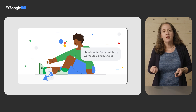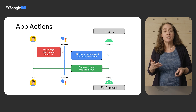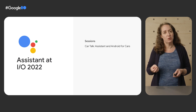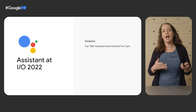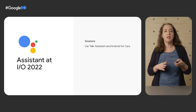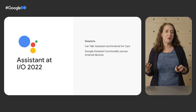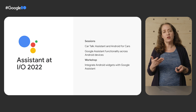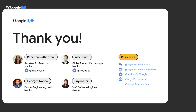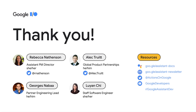Thanks, George. Google is working hard to make Assistant the best way for users to get things done with their favorite apps and devices. We've seen that users want voice to work more seamlessly, and Google's investment in machine learning and NLU can be leveraged by developers with App Actions. To learn more, check out our other Assistant sessions including CarTalk: Assistant for Android Auto, and Google Assistant Functionality Across Android Devices. For hands-on learning, check out our workshop on integrating Android widgets with Google Assistant using App Actions. Check out these additional resources to get started today, and don't forget to follow us on Twitter or sign up for the developer newsletter. On behalf of Alec, Luyan, and George — thank you.